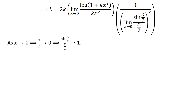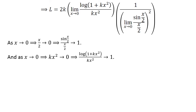As x approaches 0, half of x also approaches 0. As half of x approaches 0, sin of half of x upon half of x approaches 1. The video appearing at the upper right corner verifies this identity, and the link is also given in the description. Furthermore, k times square of x also approaches 0 as x approaches 0, and therefore natural log of 1 plus k times square of x upon k times square of x approaches 1. The video appearing in the upper right corner verifies this identity as well, and the link is given in the description.